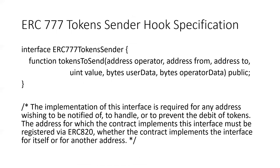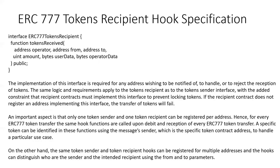There are two functions worth a closer look in this specification. One is the ERC-777 token sender interface, which has a tokens-to-send function. This interface is required for any address that wants to be notified of, handle, or prevent the debit of tokens. The address of the contract implementing this interface must be registered with ERC-820. The other interface is the token recipient specification.